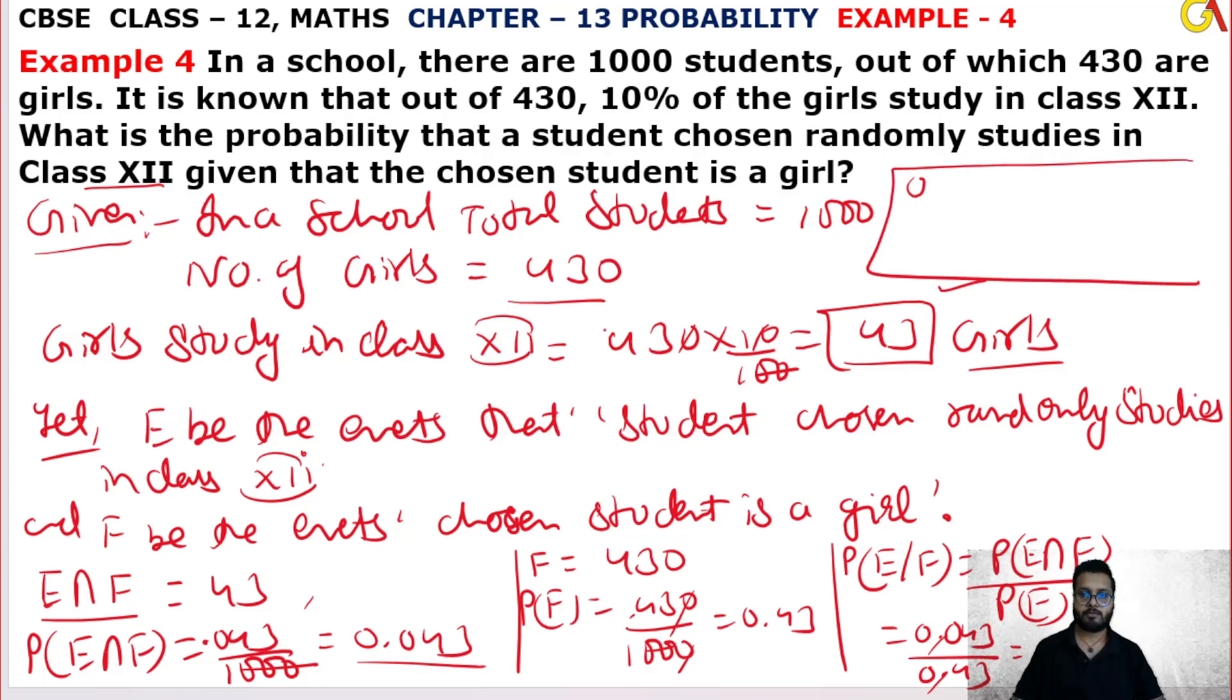When we calculate 0.043 upon 0.43, the zeros cancel out, leaving 43/430, which simplifies to 1/10. So the answer is 0.1.